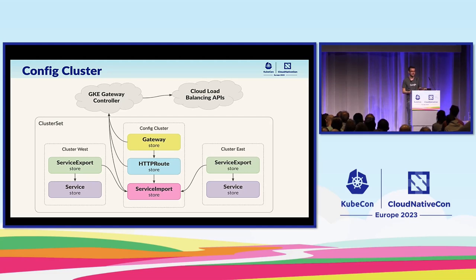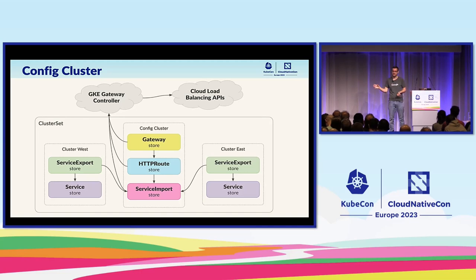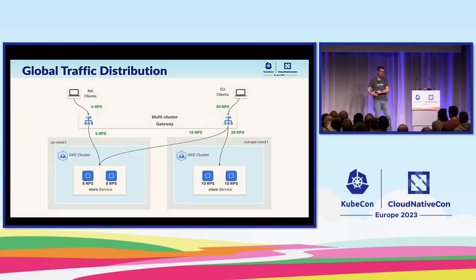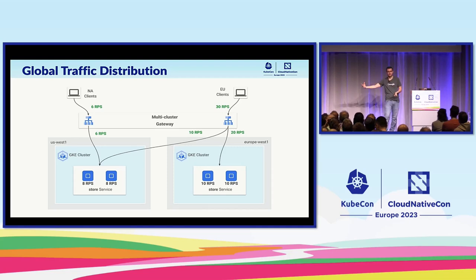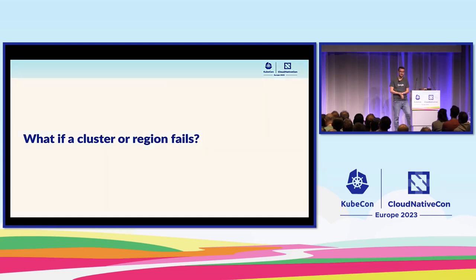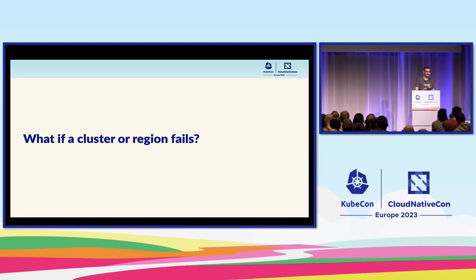Our GKE gateway implementation supports two kinds of cloud load balancers: a regional ILB and a global external load balancer, which is what we'll be focusing on today. As you'd expect, the global external load balancer is resilient to a zonal or regional outage and can forward traffic to any backend network or region. By default, all traffic is going to be routed to the closest region where there's capacity. When that cluster fills up, you'll spill over to the next closest region or cluster. We'll be covering lots of different failure scenarios in the demo ahead, and I'll hand it back to Liwen to cover how this works on VPC Lattice.